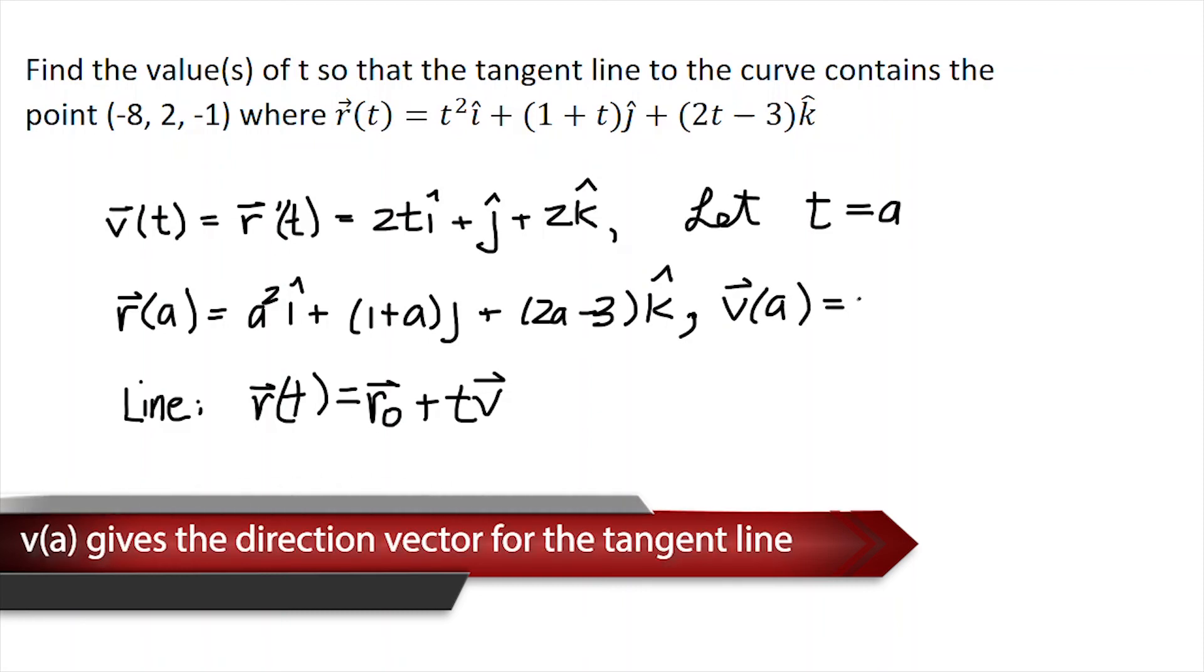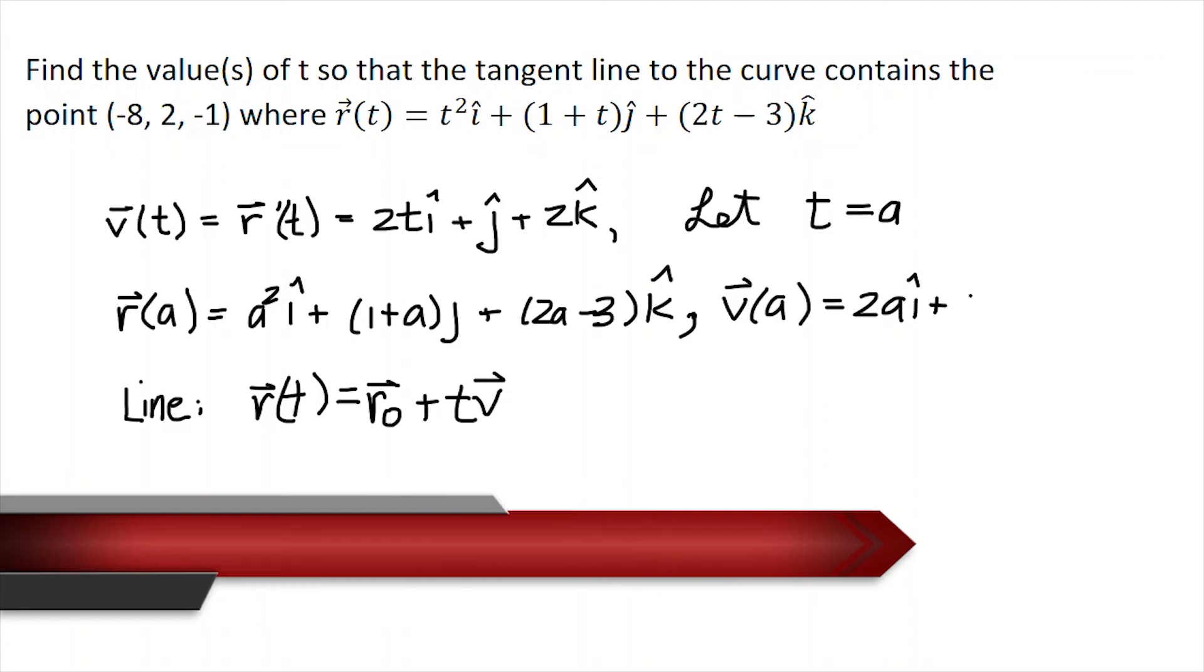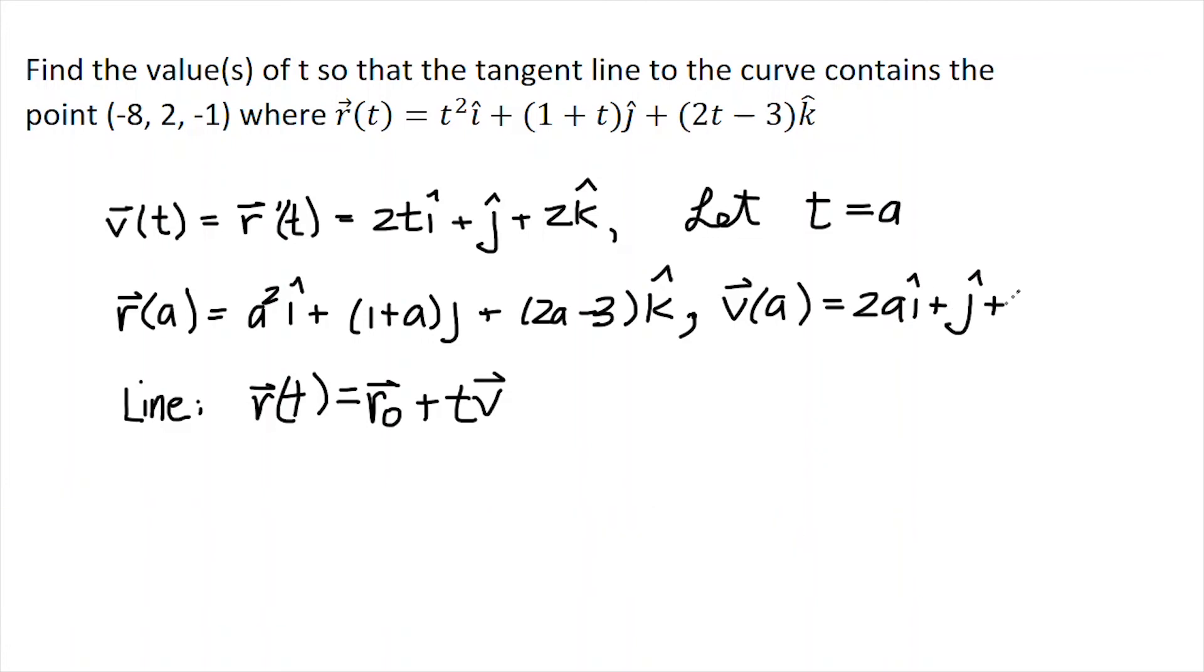So v, if I plug in a, that's going to give me 2ai, that's going to be my direction vector, plus j plus 2k. The problem with using this equation in this instance, I can't really use this equation for the line in space because t has already been used in the position vector and of course in the velocity vector.